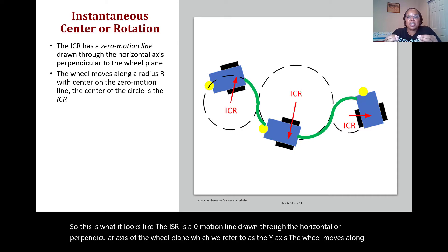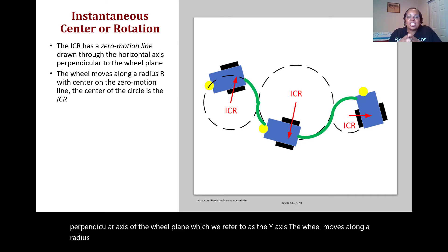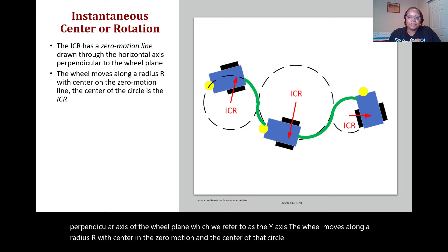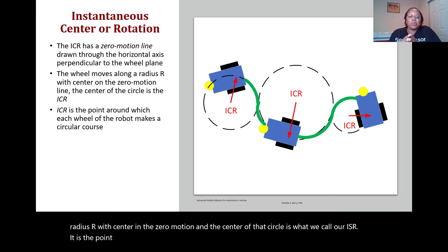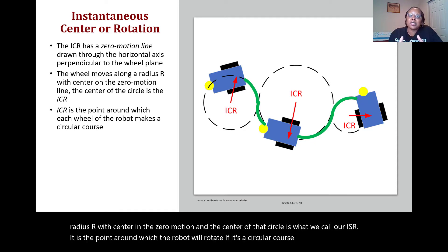The center of that circle is what we call our ICR — it is the point around which the robot will rotate if it follows a circular course. For example, if there is a difference in velocity for the robot wheels and the robot continues along that path long enough, it would trace out a circle.